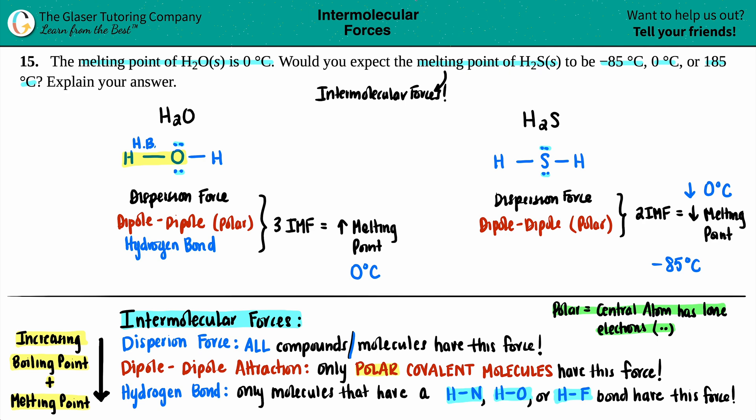That is the final answer. Since H2S does not have hydrogen bonding and only has two intermolecular forces, its melting point should be lower than water's. I hope this helped. Thank you for watching, and if you wouldn't mind, please hit the subscribe button. Thank you for all your support and kind comments. Let's keep this journey going!